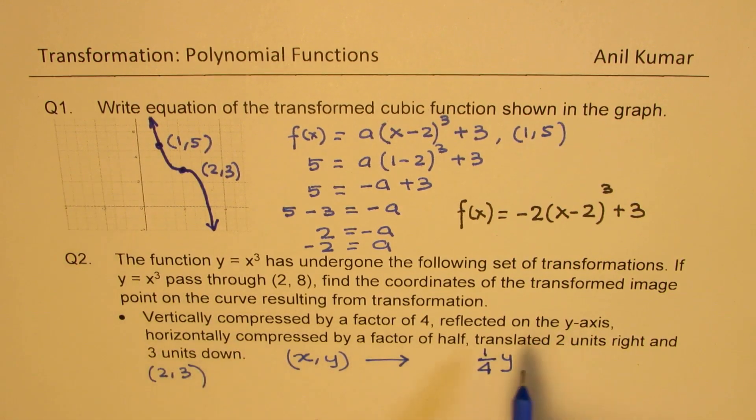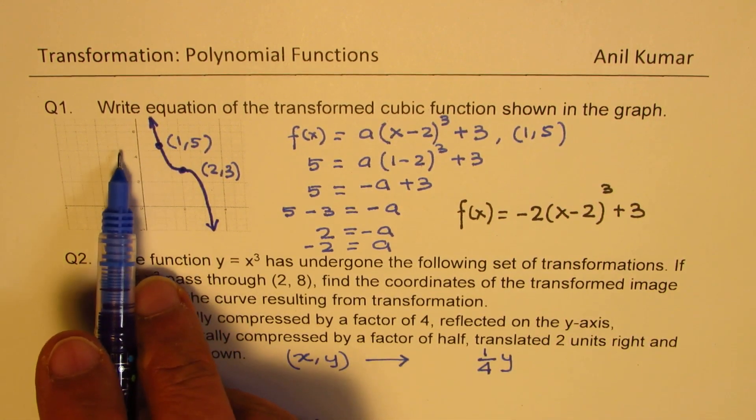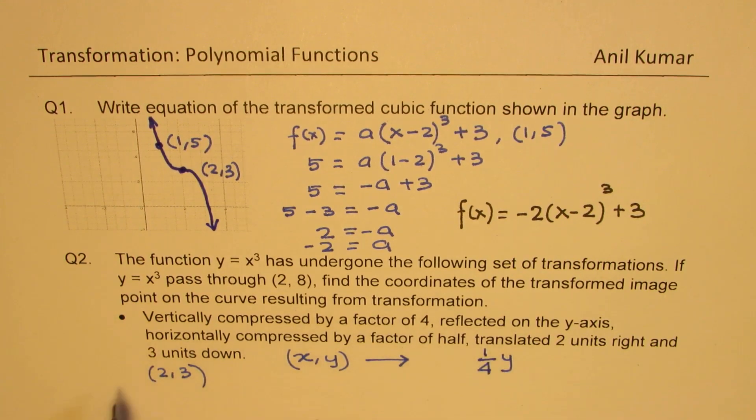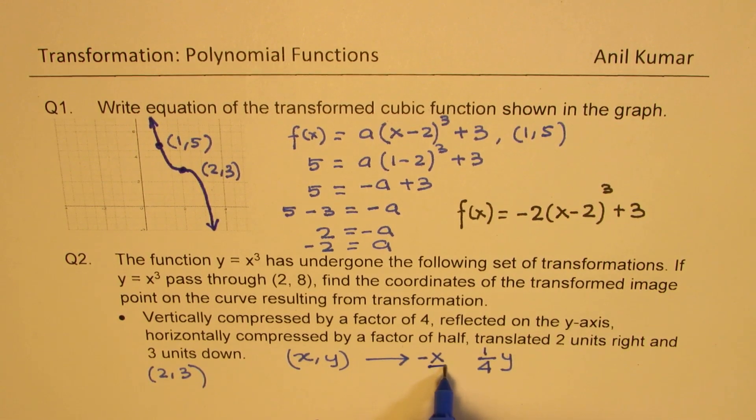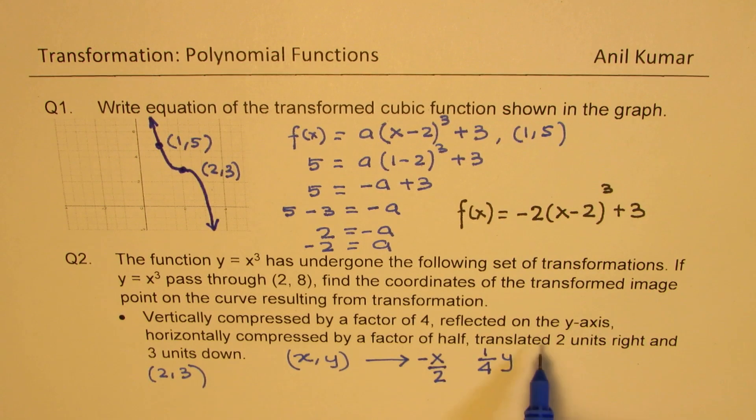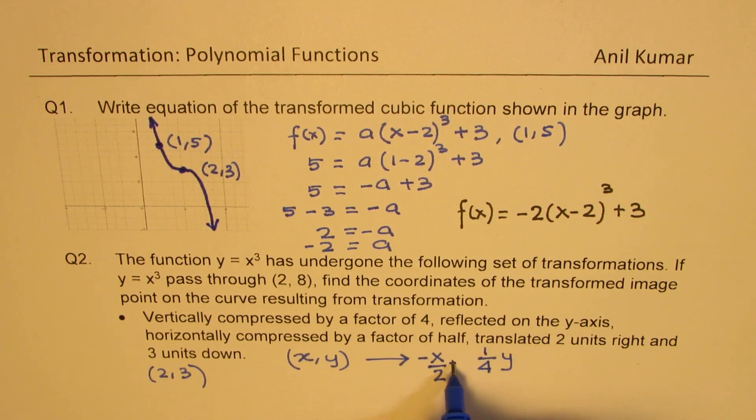so when you reflect on the y axis, in that case, the x value should be negative. So we get negative of the x value reflected on the y axis. Horizontally compressed by a factor of half, that means this should be divided by 2. Translated 2 units right, so when we translated 2 units right, the x value should increase by 2.